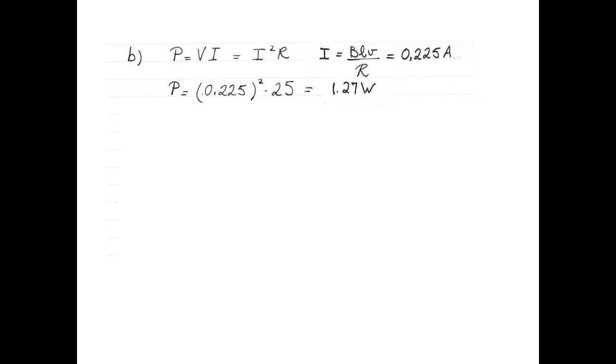And 0.225 squared multiplied by 25 ohms is 1.27 watts. You may also recall from classical mechanics that if an object is moving at a constant speed, the power exerted by a force will be given by F times V, and we can check that 0.253 newtons multiplied by 5 meters per second is also equal to 1.27 watts. Awesome.